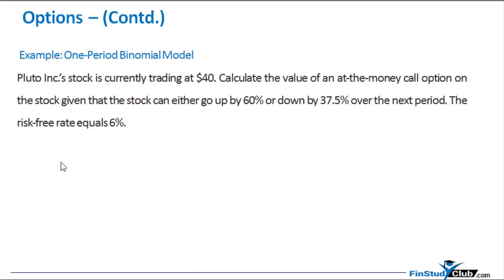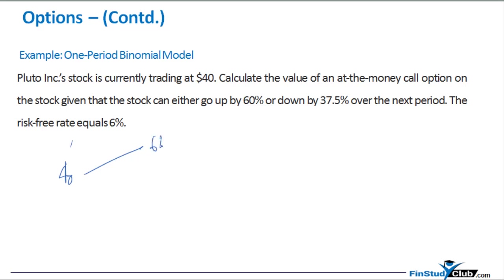Let's look at another example for sufficient practice. Pluto's stock is currently trading at $40. Calculate the value of an at-the-money call option on the stock, given that the stock can either go up by 60% or come down by 37.5% over the next period, and the risk-free rate equals 6%. The stock going up by 60% gives $64; coming down by 37.5% gives a reduced price.